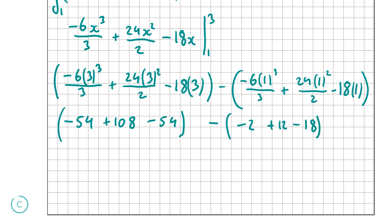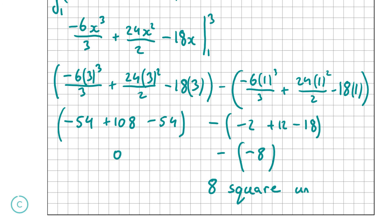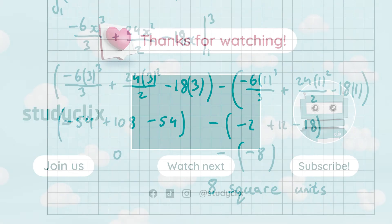Evaluating the first bracket: -54 + 108 - 54 = 0. The second bracket: -2 + 12 - 18 = -8. Subtracting: 0 - (-8) = +8. So the area of the shaded region between g(x) and f(x) is 8 square units. That's our answer for part C and the end of the video — thank you very much for watching, I hope I helped.